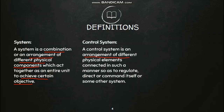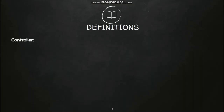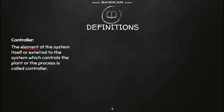A control system is an arrangement of different physical components connected in such a manner so as to regulate, direct, or command the system itself or some other system. Such a system is known as a control system. Then, 'plant' — plant is that portion of the system which is to be controlled. And who controls the plant? That brings us to the next definition: 'controller.' The element of the system which controls the plant or process is known as the controller. This controller can be an element of the system itself or an external element.